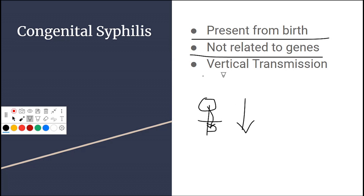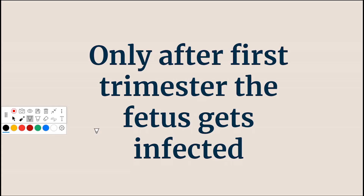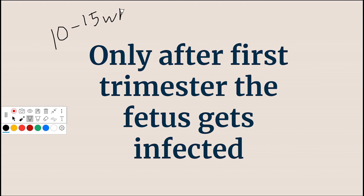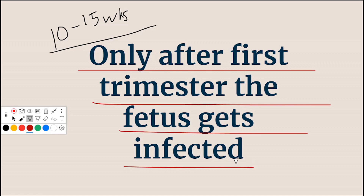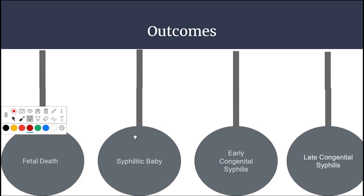This spread is called vertical transmission. In the first trimester, Treponema pallidum — the causative organism of syphilis — cannot cross the placenta. Only after the first trimester, around 10 to 15 weeks, does Treponema pallidum infect the fetus. Remember: only after the first trimester does the fetus get infected.